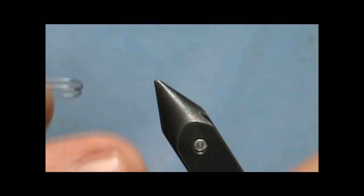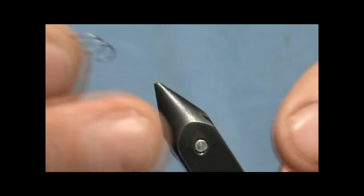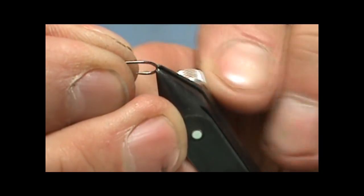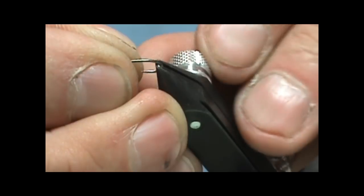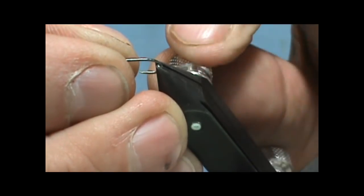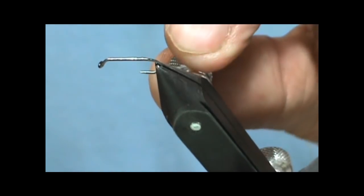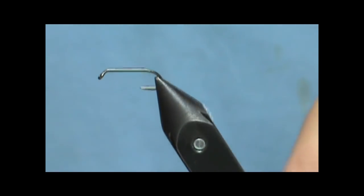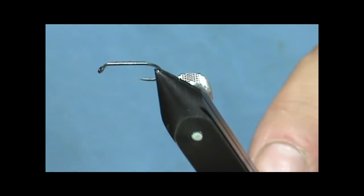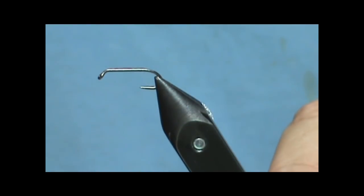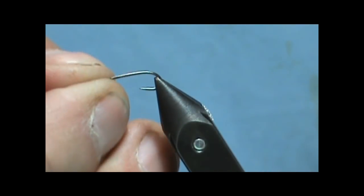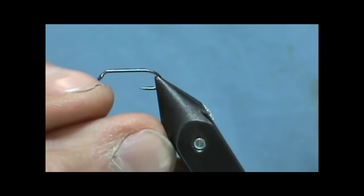Here I have a size 14 nymph hook. Simply put it in the jaws, tighten the top thumb screw and just tighten it until it stops. Don't go any further. Then take the bottom thumb screw, tighten that until it stops, and then just give it another quarter of a turn and that is all you need.